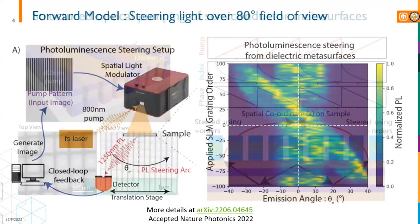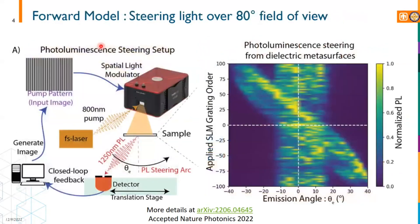We have a photoluminescent steering setup. We load this pump pattern into a spatial light modulator, which gets projected onto the sample, and we measure the light emission over different angles.